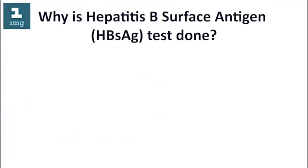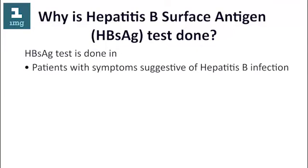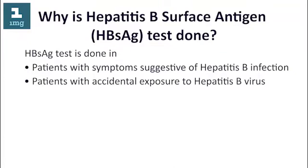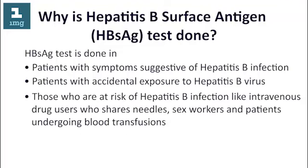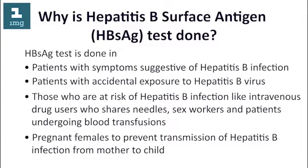Why is the hepatitis B surface antigen HBsAg test done? The HBsAg test is done in patients with symptoms suggestive of hepatitis B infection, patients with accidental exposure to hepatitis B virus, and those at risk of hepatitis B infection — such as intravenous drug users who share needles, sex workers, and patients undergoing blood transfusions. It is also done in pregnant females to prevent transmission of hepatitis B infection from mother to child.